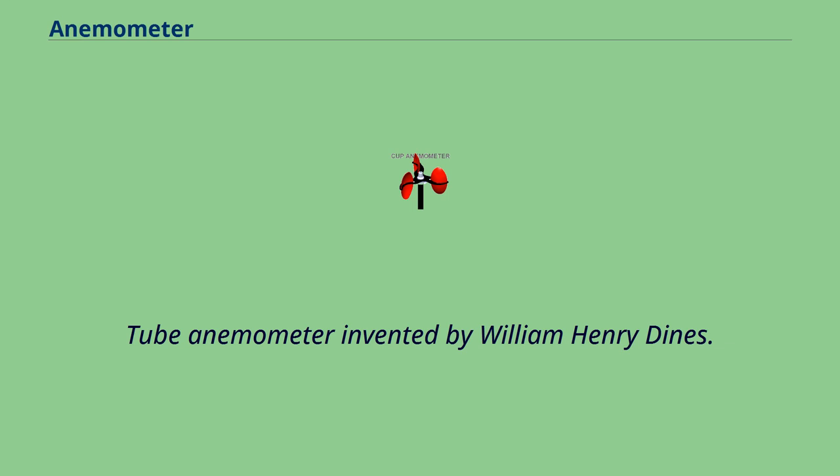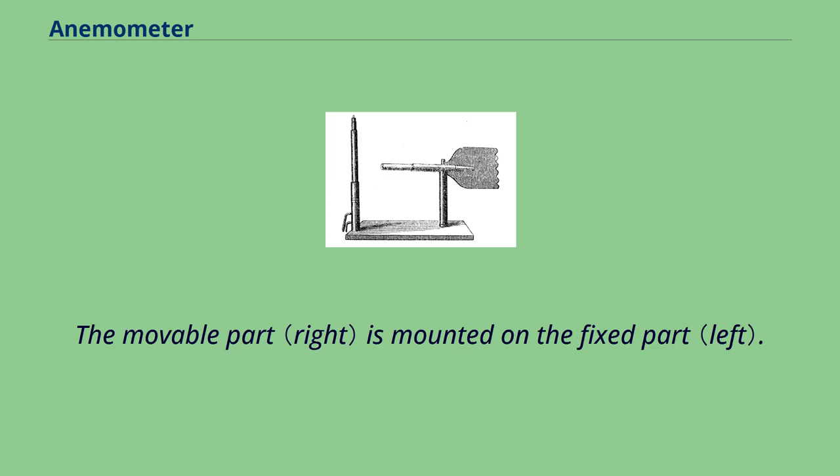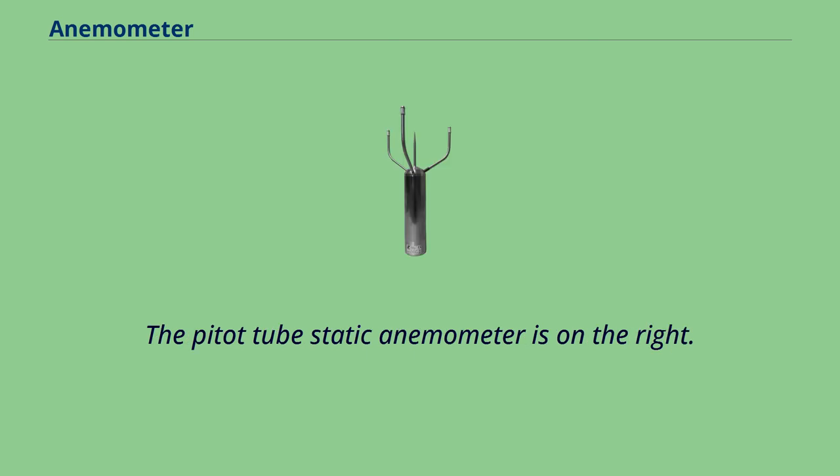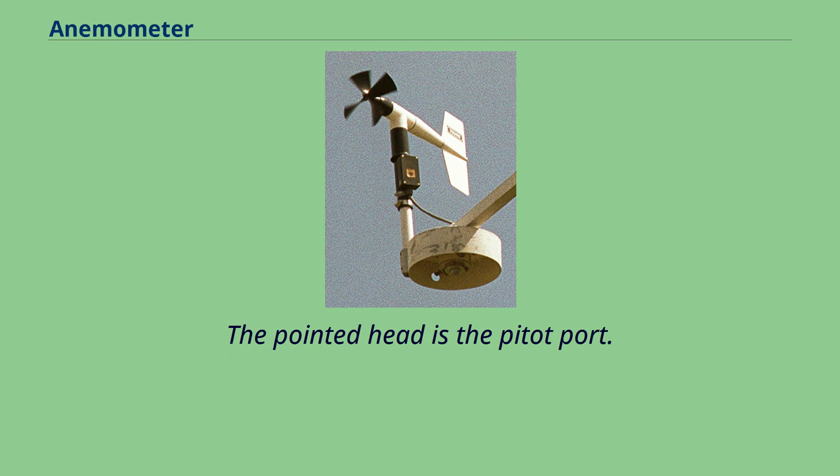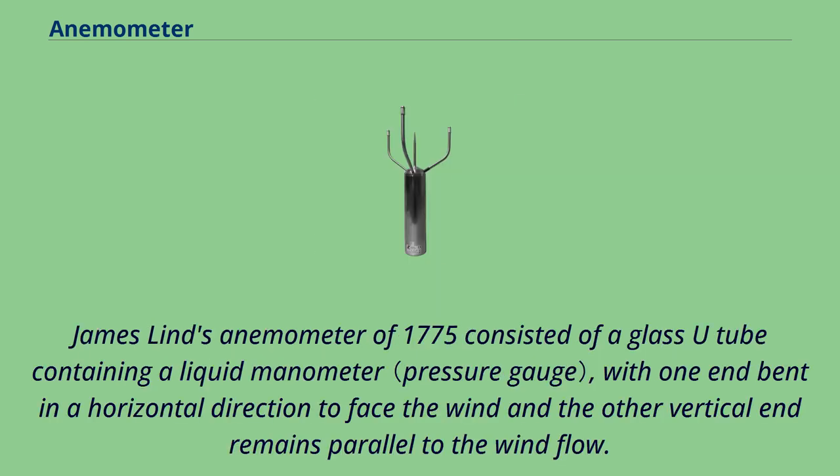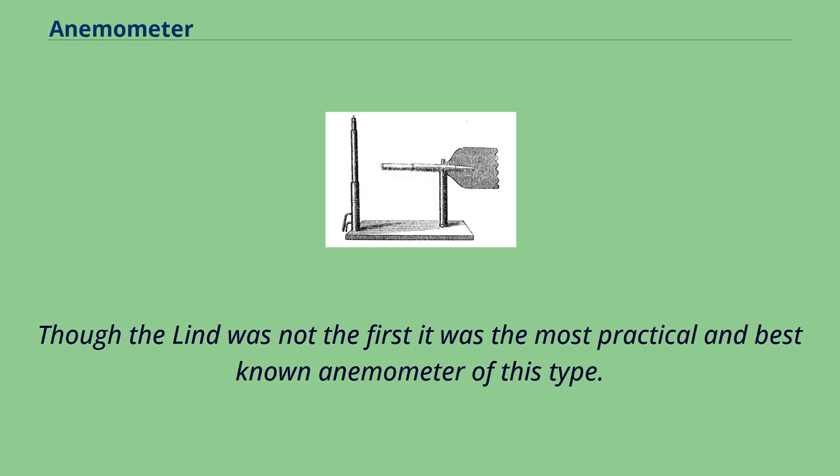James Lind's anemometer of 1775 consisted of a glass U tube containing a liquid manometer, with one end bent in a horizontal direction to face the wind and the other vertical end remains parallel to the wind flow. Though the Lind was not the first it was the most practical and best known anemometer of this type. If the wind blows into the mouth of a tube it causes an increase of pressure on one side of the manometer. The wind over the open end of a vertical tube causes little change in pressure on the other side of the manometer. The resulting elevation difference in the two legs of the U tube is an indication of the wind speed.